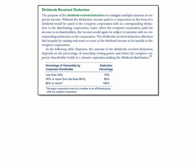Let's take a minute and talk about the dividend received deduction. The purpose of the dividend received deduction is to mitigate multiple taxation on corporate income. Without the deduction, any income paid to a corporation in the form of a dividend would be taxed to the recipient corporation, and there would be no corresponding deduction to the distributing corporation. So later when the recipient corporation paid the income to its shareholders, that income would again be subject to taxation with no deduction for the corporation.